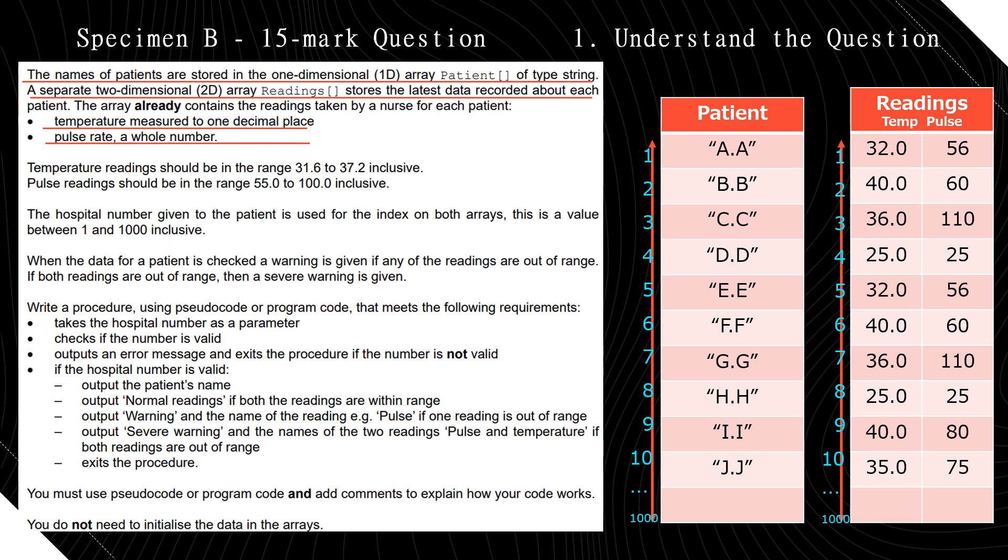The hospital number given to the patient is used for the index on both arrays — this is a value between 1 and 1000 inclusive. The patient array is a one-dimensional array with 1000 rows of names, and the readings array is a two-dimensional array with 1000 rows by two columns.